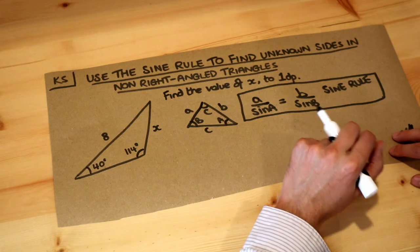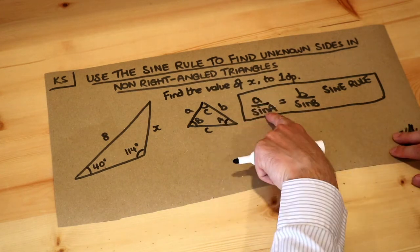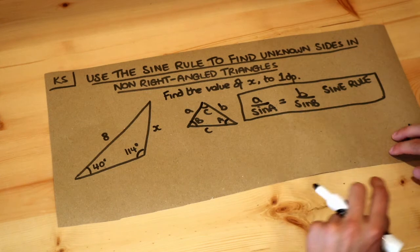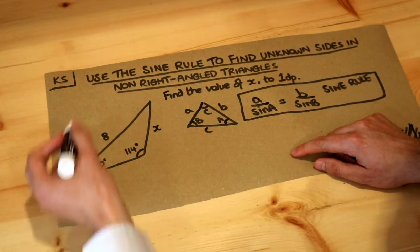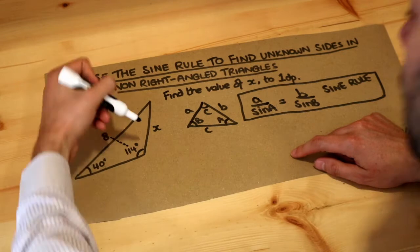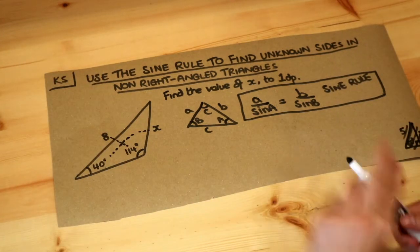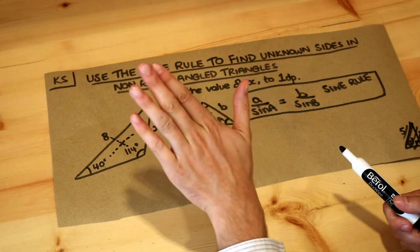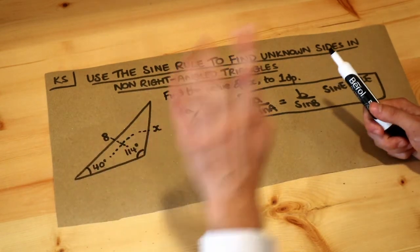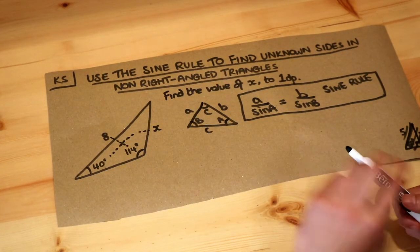We can use the sine rule when you have a side and an opposite angle pair. In this particular triangle, we've got a side and an opposite angle pair. So if you have two side opposite angle pairs like we do here, that's when we can use the sine rule.